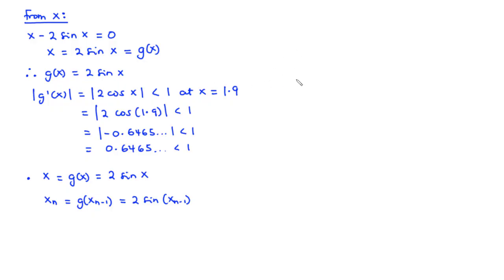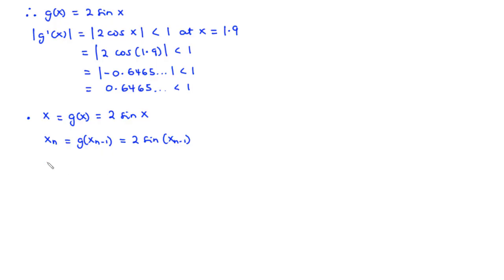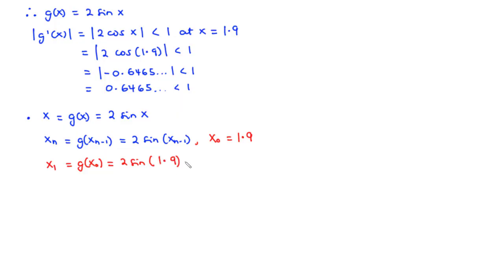For the first iteration, x₁ = g(x₀) = 2sin(x₀). Since x₀ = 1.9, we compute 2sin(1.9) — remember your calculator should be in radian mode. This gives us 1.89260.